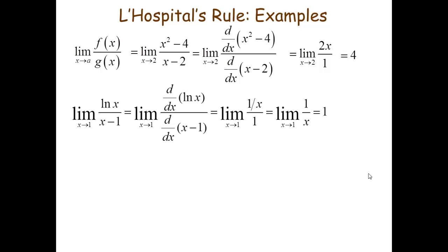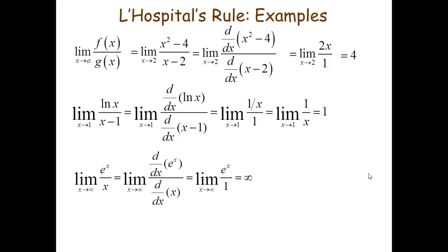So in the second case also we will do the same procedure. We will differentiate the numerator separately, the denominator separately, and substitute the value of x which it tends to. So this was the procedure from where we get the answer for indeterminate forms.